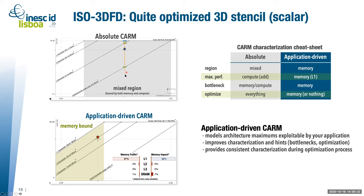When we look at the absolute CARM and draw the vertical line, the application is positioned in the mixed region, suggesting we can probably optimize by improving memory accesses until reaching the compute roof. But this was a really naive conclusion, knowing that this application is actually a stencil.